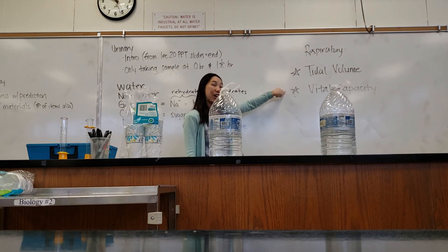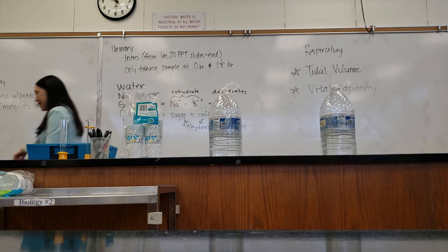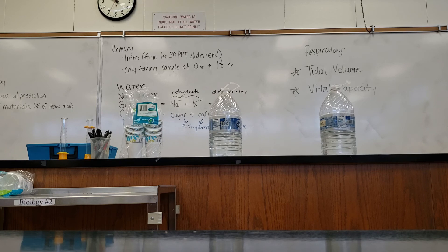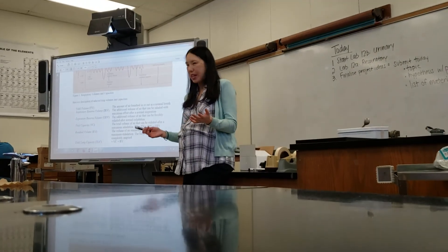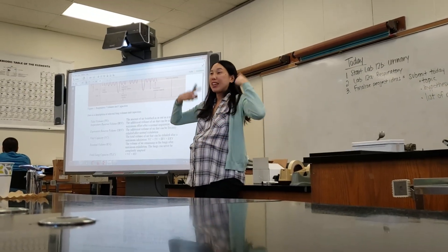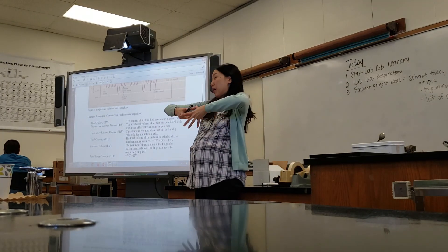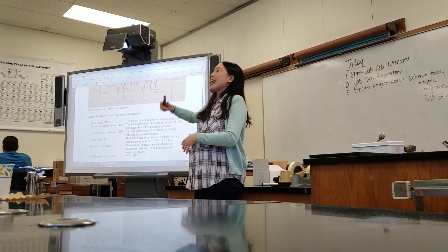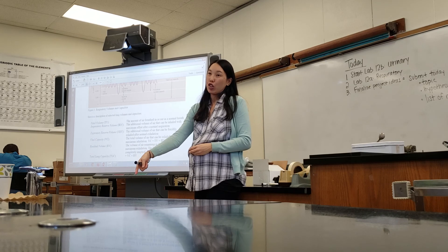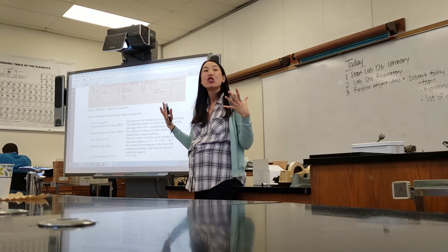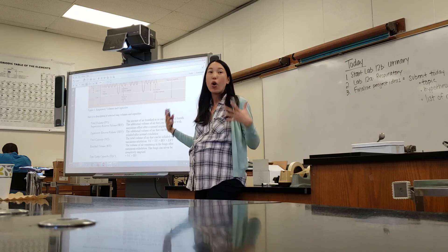The second thing you're going to measure is vital capacity. If you look in your lab manual, it's defined as the total volume of air that can be exhaled after a maximum inhalation. Realistically, what that means is you take your deepest breath in, fill your lungs up as much as possible with air — maximum amount of air in your lungs — and then you exhale all of that air out. So vital capacity is a good measurement of how much air your lungs can hold overall.